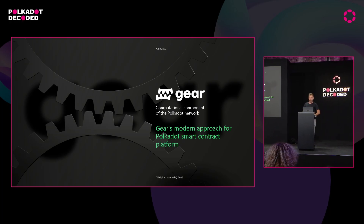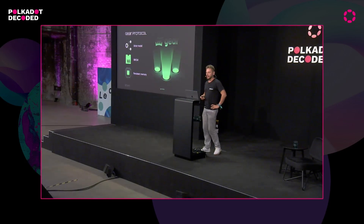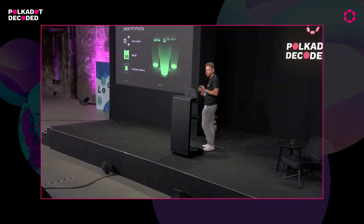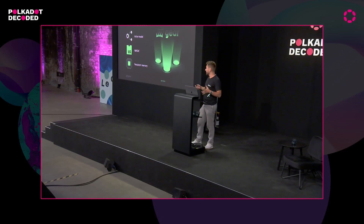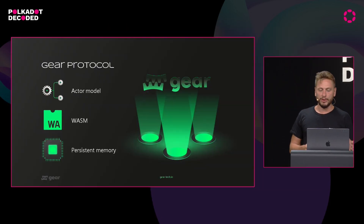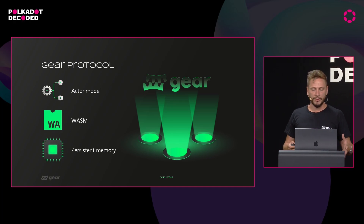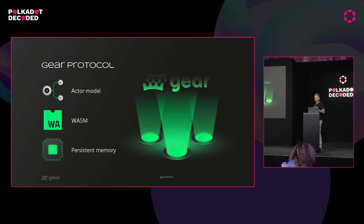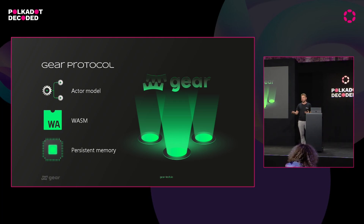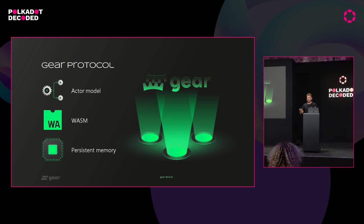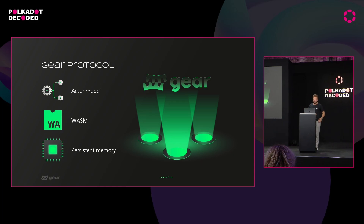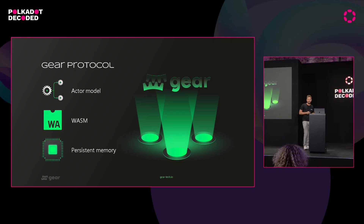Gear does it by introducing the Gear protocol. 'Protocol' might be a little bit overused as a word, but it's just a set of rules of what entities we keep on the chain, how we communicate with each other, and basically a definition of what's going on on our platform. Unlike typical app-specific chains, Gear allows anybody to come and upload some piece of code on our platform, and we still need to run it securely and fast.